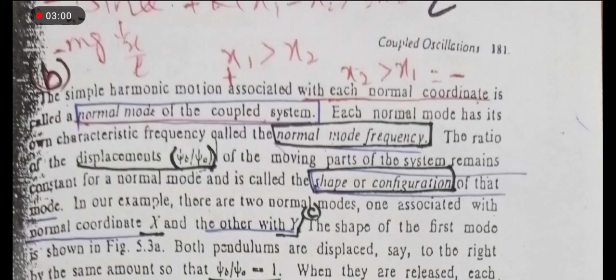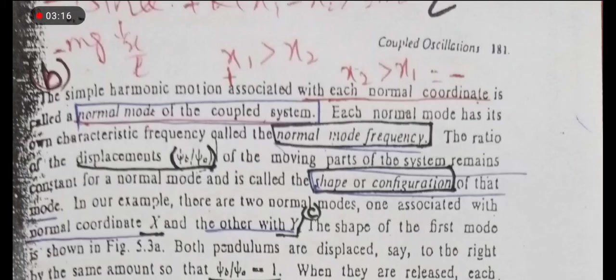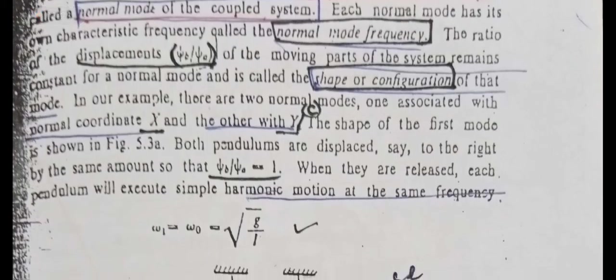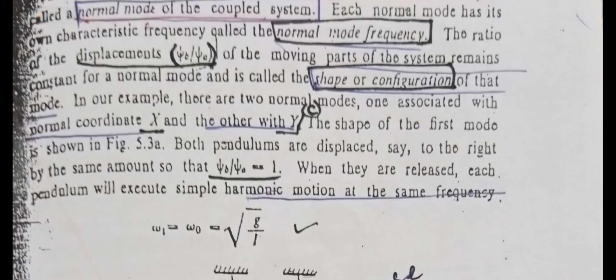ہمارے پاس ایک constant ratio ہے۔ پہلے case میں psi_b over psi_a is equal to 1 ہوتا ہے، اور دوسرے میں psi_b equal to minus psi_a ہوتا ہے، تو psi_b over psi_a is equal to minus 1 ہوتا ہے۔ یہ ہمارے پاس shape of configuration دیتی ہے۔ ہمارے پاس دو cases ہیں: ایک in-phase اور ایک out-of-phase۔ ہمارے example میں دو normal modes ہیں — ایک normal coordinate x کے ساتھ associated ہے اور دوسرا y کے ساتھ۔